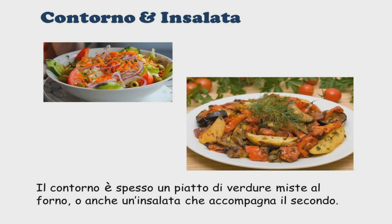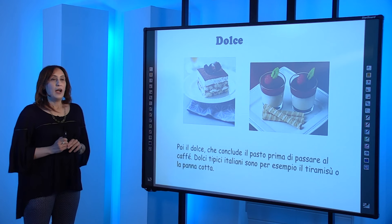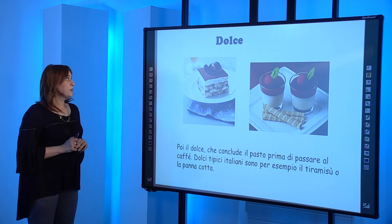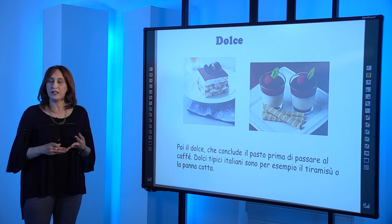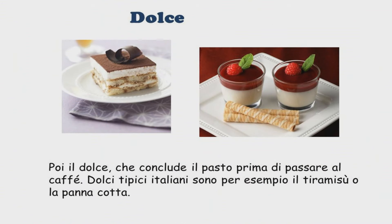Con il secondo piatto viene servito un contorno. Il contorno è spesso un piatto di verdure miste al forno o anche un'insalata che accompagna il secondo. Alla fine del pranzo oppure della cena viene servito il dolce, che conclude il pasto prima di passare al caffè, perché gli italiani finiscono sempre di pranzare o di cenare bevendo un caffè. Dolci tipici italiani sono, per esempio, il tiramisù oppure la panna cotta.